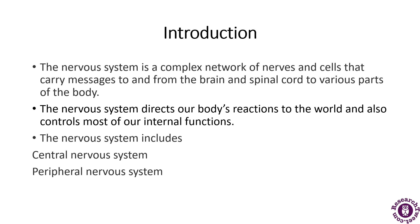In the human body, the neural system integrates the activities of the organs based on the stimuli which the neurons detect and transmit. The nervous system includes two types: the central nervous system and the peripheral nervous system.